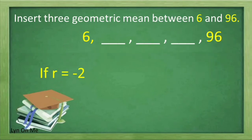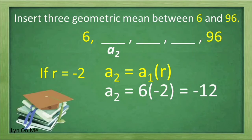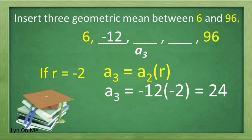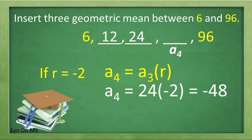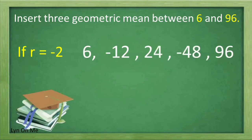Now, what if r is equal to negative 2? We solve the second term by multiplying the first term by the common ratio: 6 times negative 2 equals negative 12. To find the third term, we multiply negative 12 by negative 2, which equals 24. To find the fourth term, 24 multiplied by negative 2 equals negative 48. So when r is equal to negative 2, our sequence is 6, negative 12, 24, negative 48, 96.